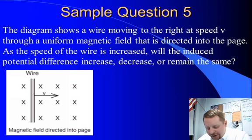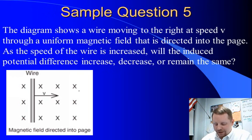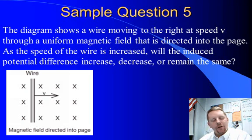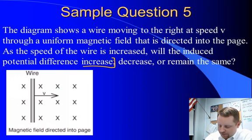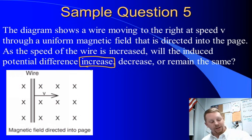Sample question here. The diagram in the bottom left shows a wire moving to the right at some speed v, through a uniform magnetic field directed into the page. Hence all the x's showing the back of the arrow as it goes away from us. As the speed of the wire is increased, will the induced potential difference increase, decrease, or remain the same? Well if you recall, the induced potential difference increases as the speed increases. So the induced potential difference must increase in this scenario.